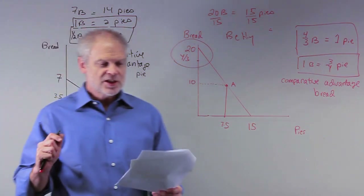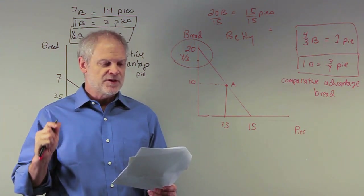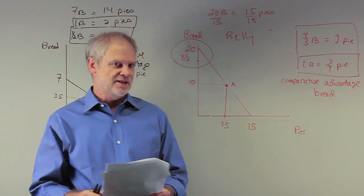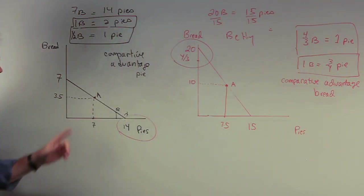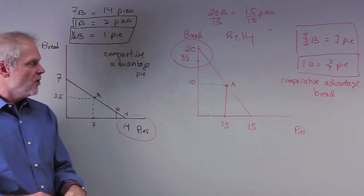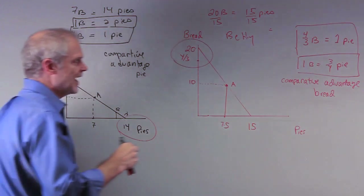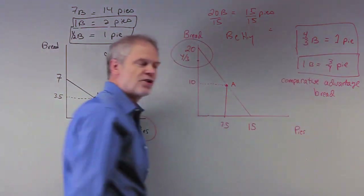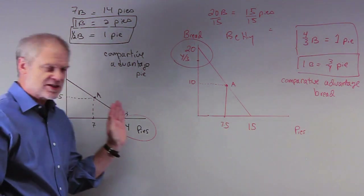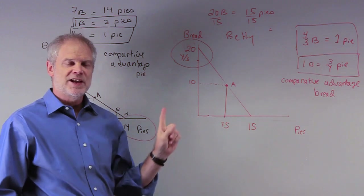Now the question goes: relative to this initial situation, Barney and Betty could specialize according to the principle of comparative advantage, and both could benefit, provided they agreed that one loaf of bread will trade for somewhere between — here's the key. We already said Barney has a comparative advantage in pies, and Betty has a comparative advantage in bread. We know Barney specializes in pie, and every pie costs him half a bread. For Betty, every pie costs her four-thirds of a bread.